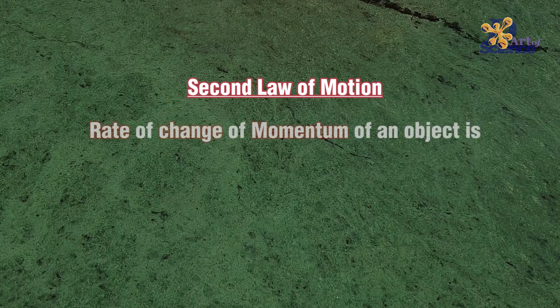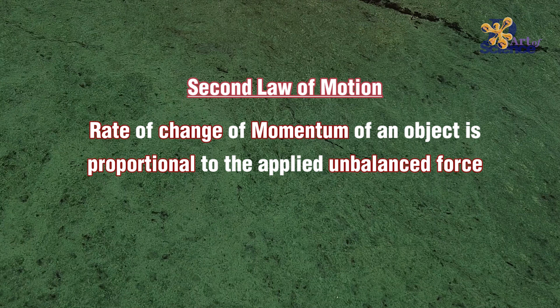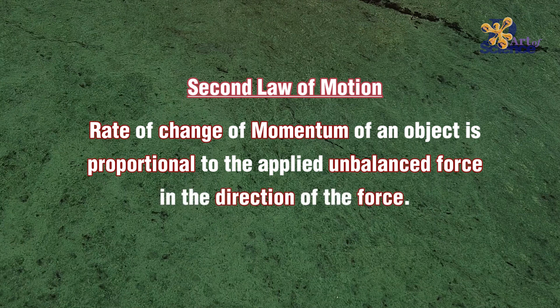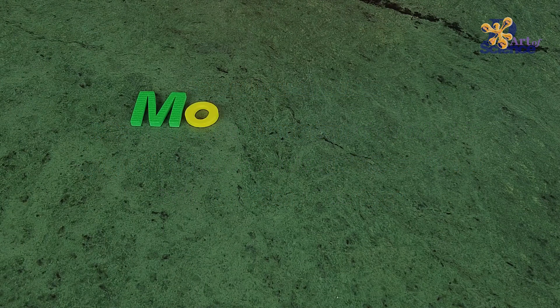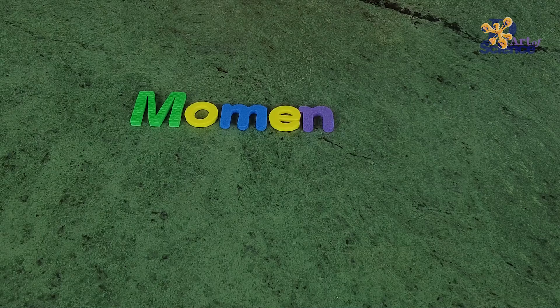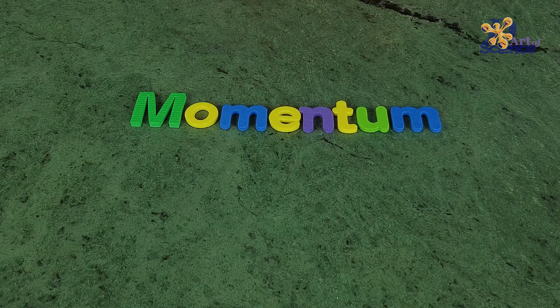Finally, let's look at the definition of the second law. It states that the rate of change of momentum of an object is proportional to the applied unbalanced force in the direction of the force. This might seem confusing — let's break it down and simplify it. Momentum is a property of a moving body and it is the product of an object's mass and its velocity.